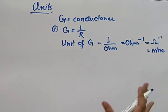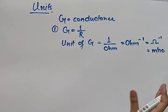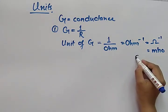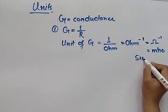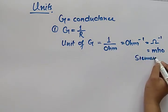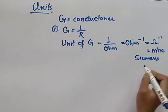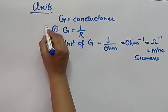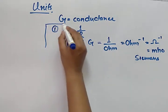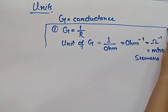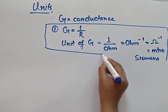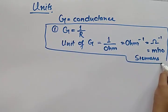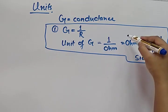The unit of conductance is ohm inverse, which is also called mho. Our major unit, which is most commonly used, is Siemens. Siemens is the same thing — these are the units of conductance.